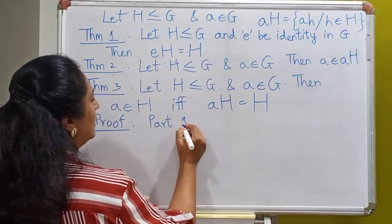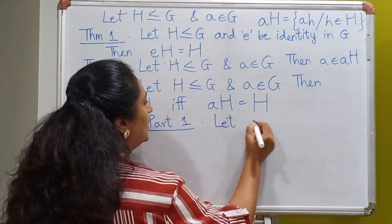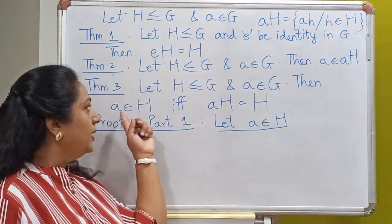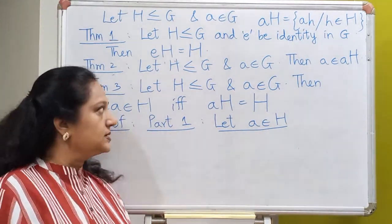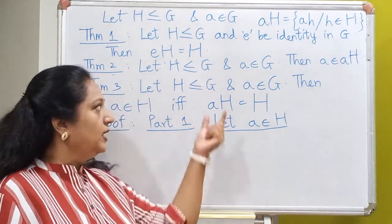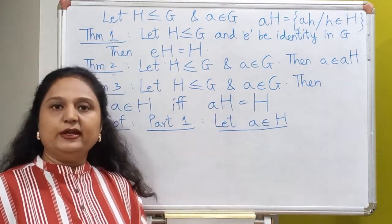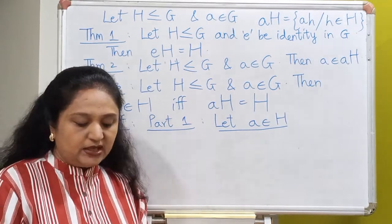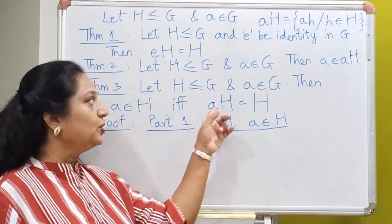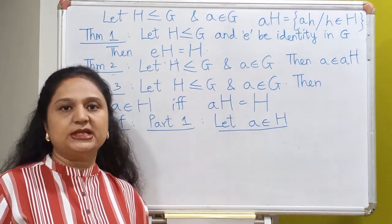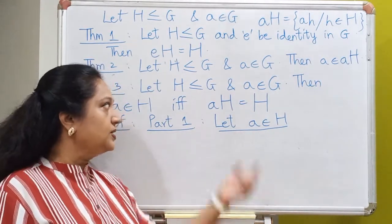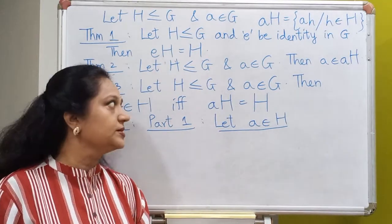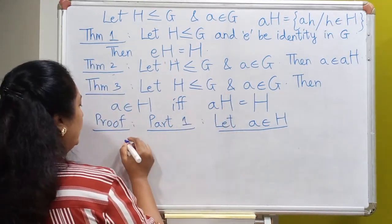In Part 1, the assumption is that the element A lies inside H, and we wish to prove that the left coset AH equals H. Since they are sets, we use the technique of showing each is a subset of the other. Let's first prove that AH is a subset of H, and then that H is a subset of AH. So let X belong to the left coset AH.